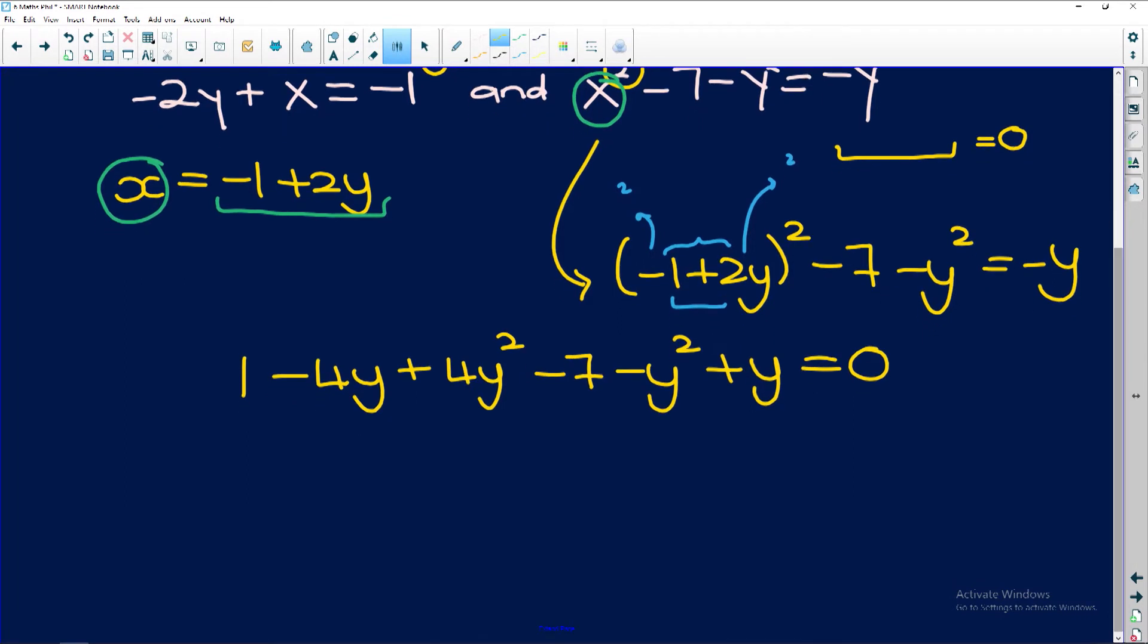So simple, easy peasy. Now if I simplify like terms, the y squareds are over there. The y's are over here. And the constant terms are just the numbers. So if I look at y squared first, 4y squared minus y squared is going to give me 3y squared. Negative 4y plus y is negative 3y. And 1 minus 7 is negative 6 equal to 0.